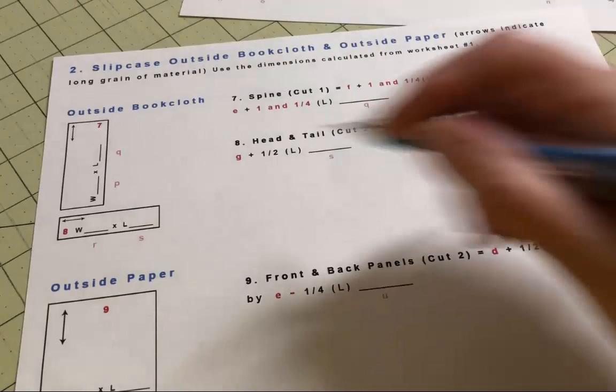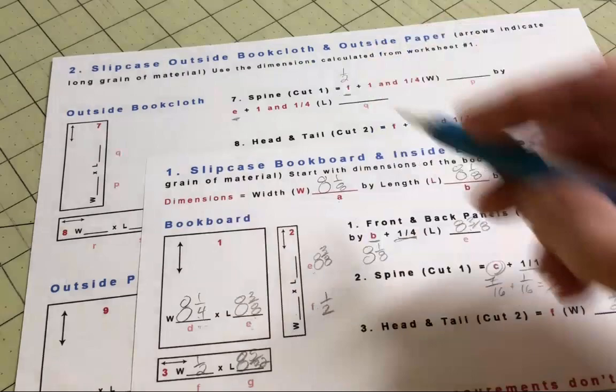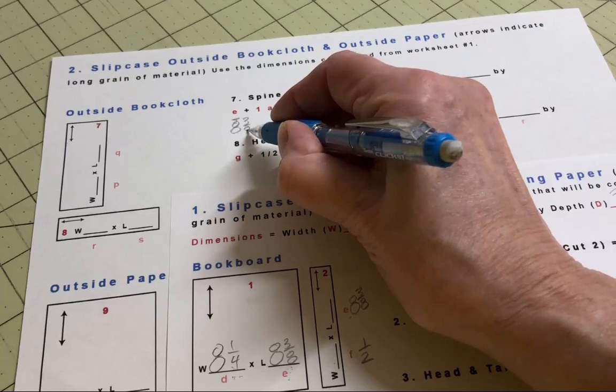Once you've worked your way through both worksheets, you're ready to cut your materials. By the way, I will often complete these worksheets twice, just to double check my math. It's easier to take a little extra time at this step rather than discover, after you've cut and glued things together, that something doesn't fit right.